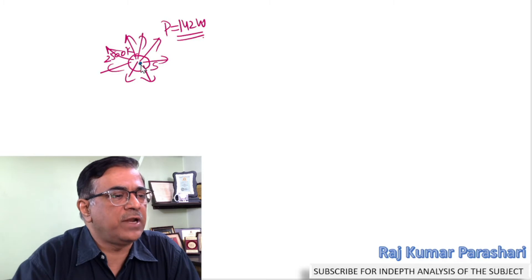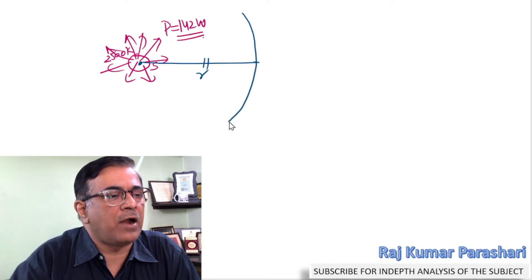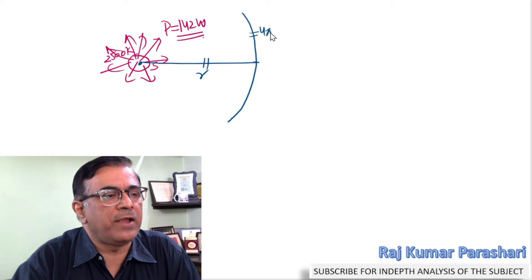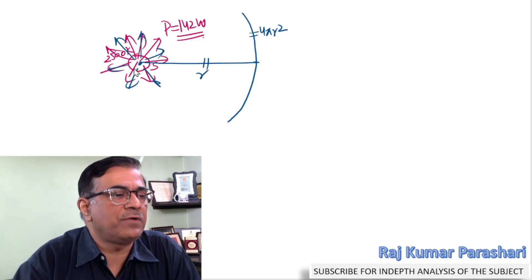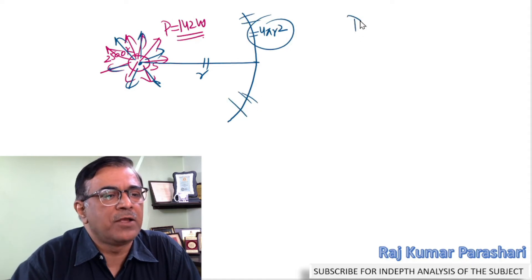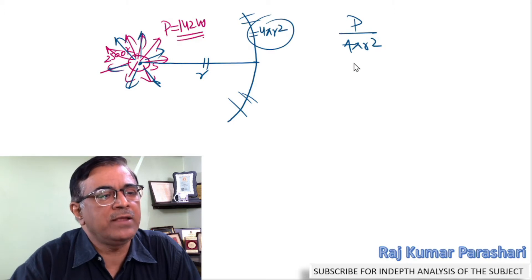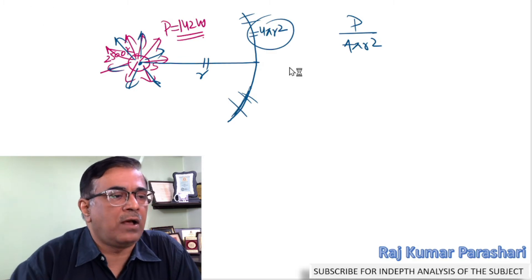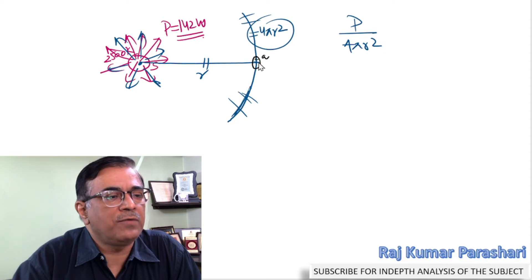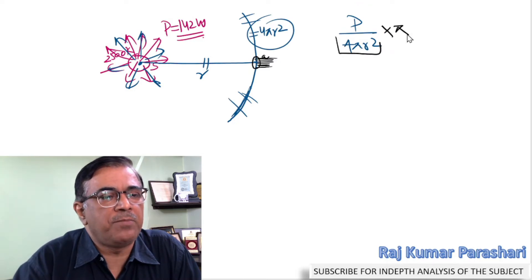Taking the filament as center, draw a sphere of radius small r. Imagine the complete sphere of radius r — its total surface area is 4π r². Whatever energy is emitted by the filament per second must leave this sphere per second. So dividing P by 4π r² gives the energy leaving per unit area per unit time. Now imagine an eye of radius a located on this sphere.